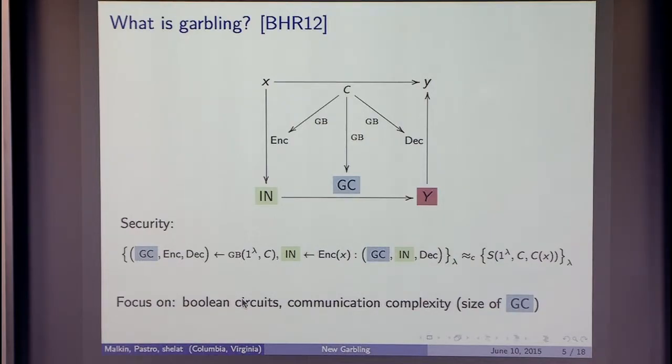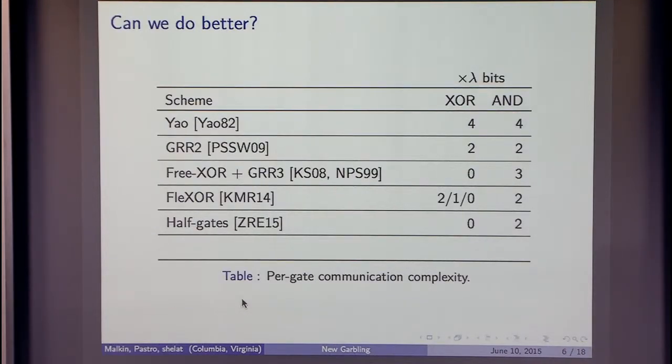The focus of this talk will be on Boolean circuits, and I'm going to talk about communication complexity. Mike gave me a very good introduction to what I'm going to talk about. So I'm going to borrow his scoreboard. He listed a lot of schemes, and he listed the communication complexity they achieve in terms of lambda bits. Lambda is the security parameter. The scheme with minimal communication complexity is the Half Gates paper by Sammy, Mike, and David. So can you do better? The answer is, well, if you want to garble using something that is called linear garbling, and you garble gate by gate, the answer is no. They prove that this scheme is optimal.